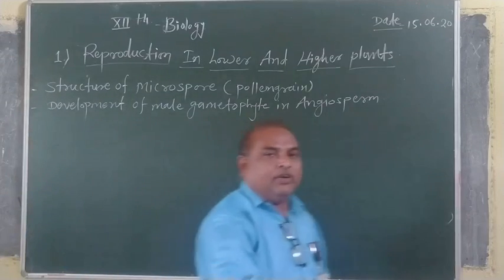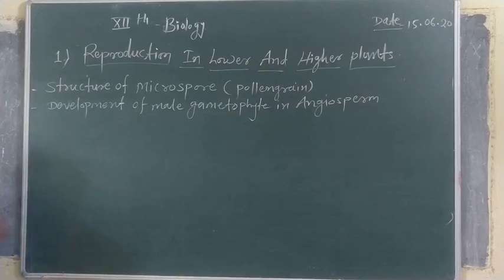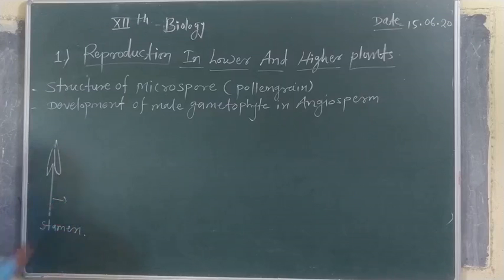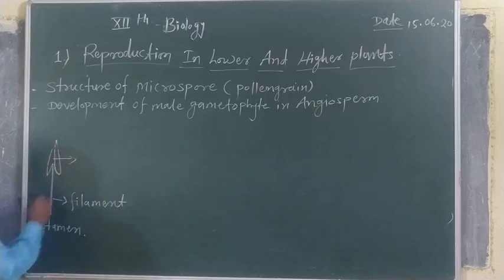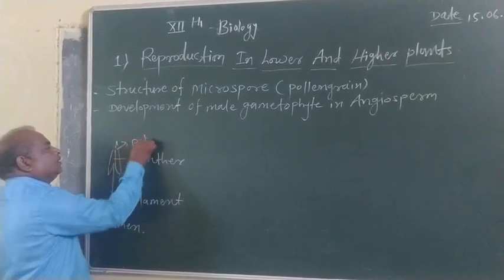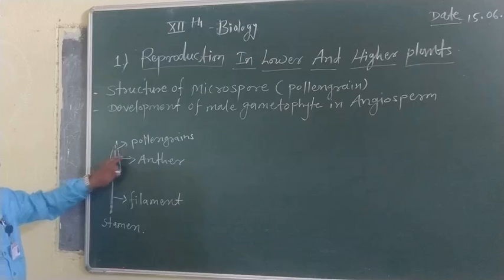Before going to the study of male gametophyte, we must know the microspore or pollen grain. As we know, in angiospermic plants the androecium is a male floral part. The androecium is made up of a small unit called a stamen. Each stamen consists of two parts: the lower stalk-like structure called the filament, and the upper bud-like structure called the anther. At maturity, when the anther gets matured, the pollen grains are released from the anther wall after bursting.